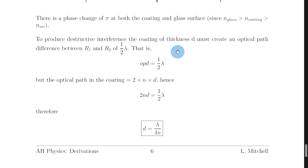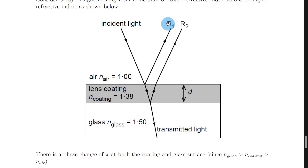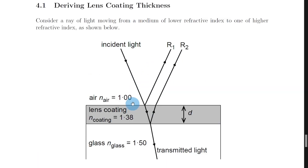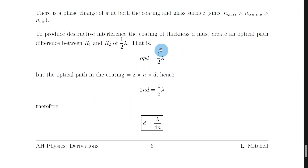To produce destructive interference, the coating of thickness d must create an optical path difference between R1 and R2 of half a wavelength. The light forming R1 only travels from the incident ray to the surface and back up, whereas R2 travels down through the lens coating and back up again, so the optical path travelled by R2 is greater than R1. This difference in distance is the optical path difference, and it must be half a cycle — half a wavelength — out of phase to produce destructive interference. So we can write: optical path difference equals lambda over 2.